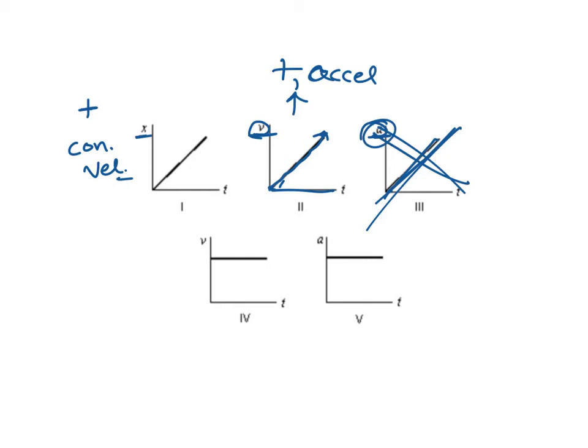This fourth one is a velocity graph, designated by the V. We have a horizontal line above the x-axis. If we're above the x-axis on a velocity graph, we are moving in the positive direction. A horizontal line on a velocity graph means constant velocity.